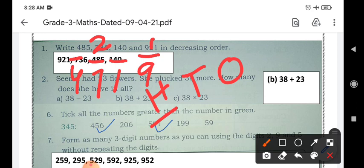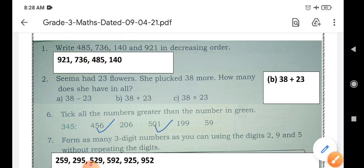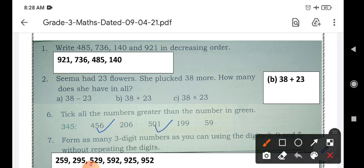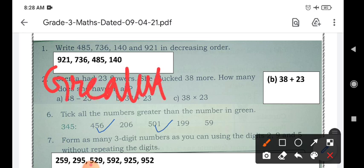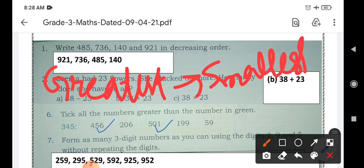After 7 comes 4. So this will be the third number that I will be writing after 736. At last, we are left with 140. So we are going to write that 140 here. This is the journey. We have started from greatest to smallest number. This is called descending order or we may say decreasing order as well from greatest to smallest.